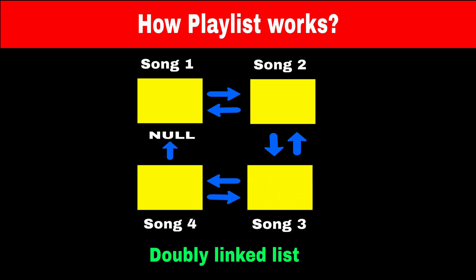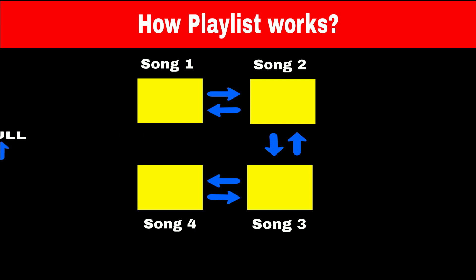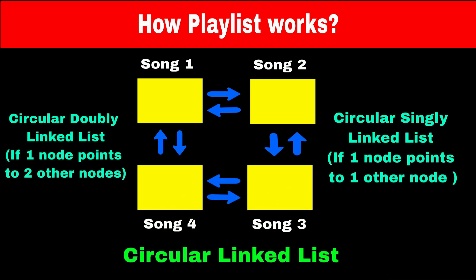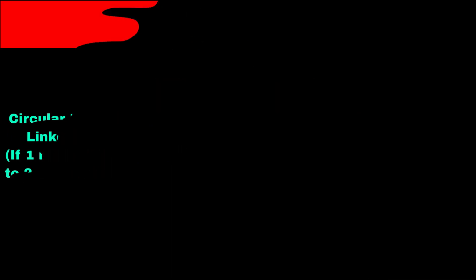If we reach the last song, meaning the last node is pointing to null, then the playlist is finished. But if we want to restart the playlist automatically, the last node will point to the first node, so when we finish the last song, the first song will automatically be played. This looks like a circular structure, which is why it's called a circular linked list.